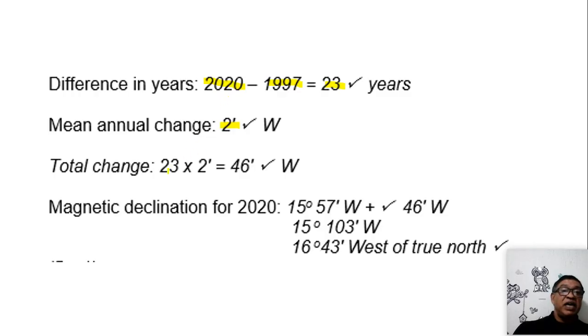I multiply the number of years in terms of the difference in years and the mean annual change, which gives me an answer of 46 minutes. So I take the one that you noticed on the information, which was 15 degrees 57 minutes. And I add my total change, which is 46 minutes westwards. I get an answer of 15 degrees 103 minutes.